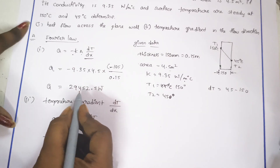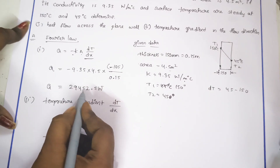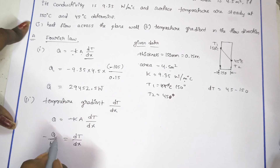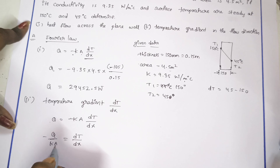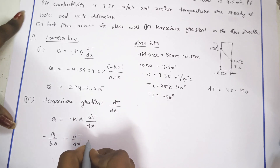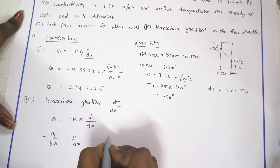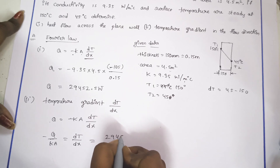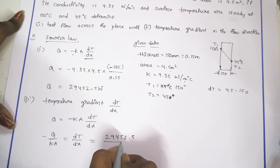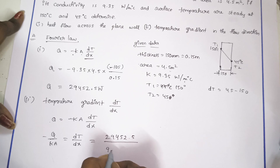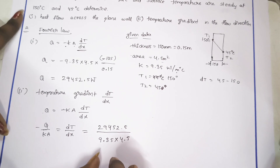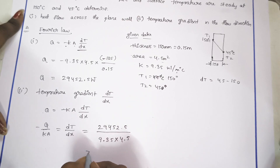Q is 29452.5 Watts. Then, substituting K as the thermal conductivity value 9.35 and area value 4.5, we get: 29452.5 divided by K 9.35 into 4.5. So our temperature gradient value is 700.